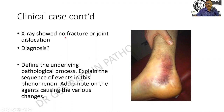X-ray showed no fracture or joint dislocation. What is your diagnosis? Define the underlying pathological process and explain the sequence of events in this phenomenon. Add a note on the various agents causing the changes.